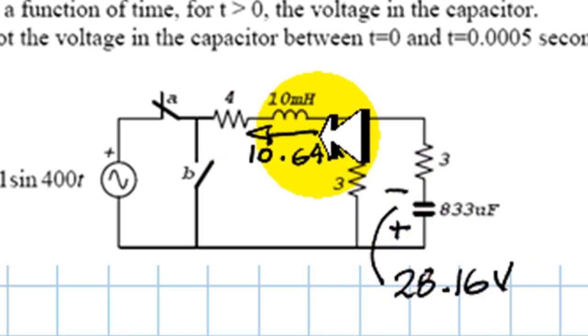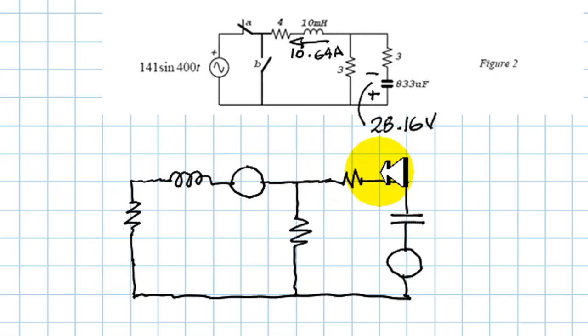We can draw the circuit for t greater than 0, with the switches operated. This one is open, eliminating the source from the circuit, and this closes this one into a short. We are left with this part of the circuit. Let's draw that in the Laplace domain. This is the way the circuit looks right now. This is the 4 ohm resistor, over here. This is this 3 ohm resistor, and this is this 3 ohm resistor, up here.